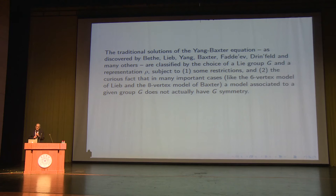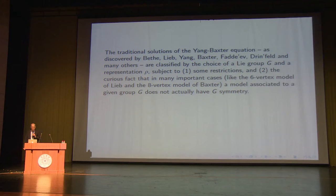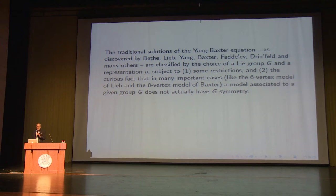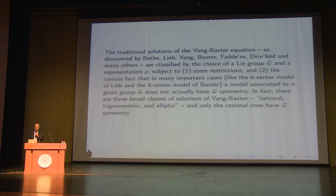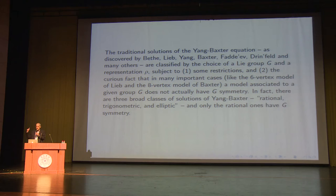The history of integrable spin systems and integrable relativistic theories in two space-time dimensions, studied by many illustrious people, has given a lot of traditional solutions of the Yang-Baxter equation, which are classified by a Lie group G and a representation ρ, with some bells and whistles. There are some restrictions on ρ and in some cases G. And there's the curious fact — which to me for most of the last 30 years seemed completely crazy — that in many important cases the model associated to a given group G does not actually have G-symmetry. In fact there are three broad classes of solutions of Yang-Baxter called rational, trigonometric, and elliptic, and only the rational ones have G-symmetry. I really believe Kevin's assertion was correct when he claimed that this perspective should shed new light on basically all facets of this story.